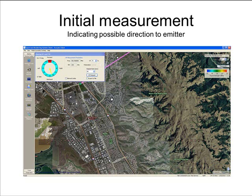For this example we are using Bing maps showing the satellite view, so that we will be able to see the target transmitter at the end of the homing fix exercise. Note the color bar at the top right of the screen — this shows the scale of signal strength, and the operator can change the range of the scale using the mouse. Just below the homing fix control box, you can see a green dot indicating a received signal strength of around minus 65 dBm, with a direction finding measurement indicating that the target is located towards the northeast.